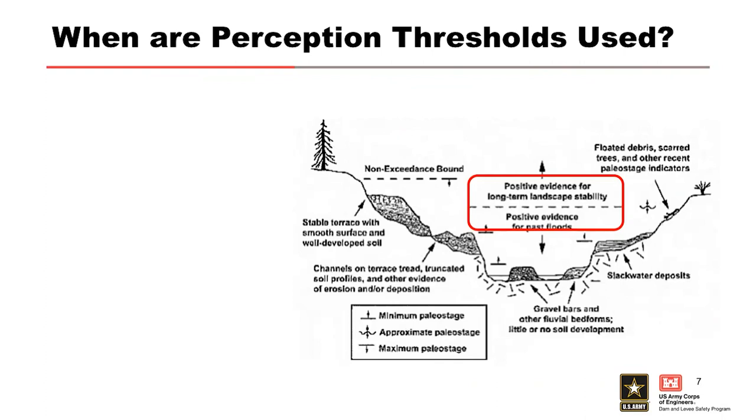As we discussed in the previous lecture, when positive evidence of a large prehistoric flood is discovered, it's called a paleo stage indicator or a PSI. Flow estimates associated with a paleo stage indicator are typically modeled in best fit as interval data. Examples of direct evidence are floated debris or scarred trees that can be age dated using radiocarbon-14 dating or other modern dating methods.